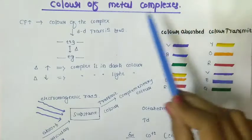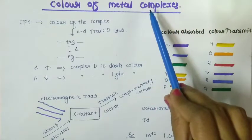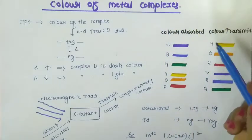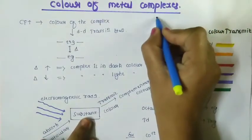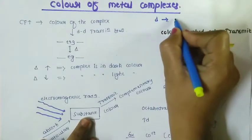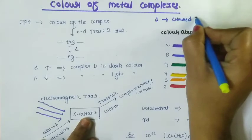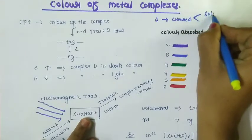Metal complexes with partially filled d orbitals are colored in both solid state and liquid state. These d orbitals are responsible for the color observed in the complexes.